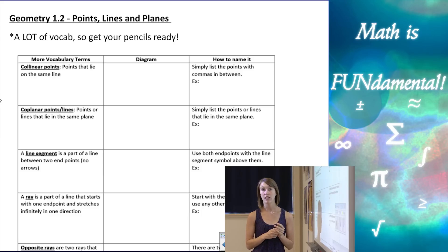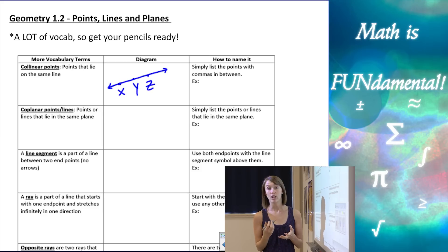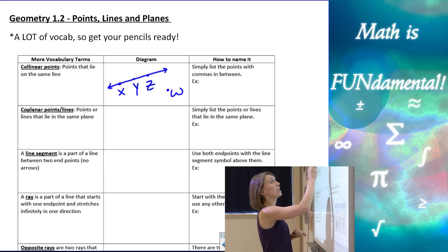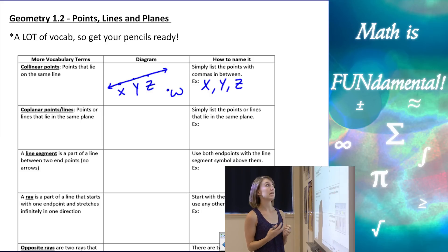Collinear points are points that all lie on the same line. Co means that it shares something. Linear means line. So collinear, I've got points, so if we draw a line, points X, Y, and Z here would all be collinear. If I had another point out here that was W, that would not be collinear with the others. And when you're naming collinear points, you just want to list them with commas in the middle. So X, Y, and Z would be my collinear points in this case.